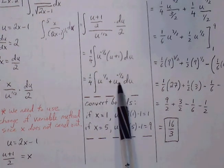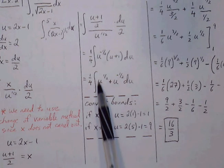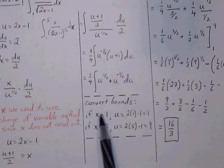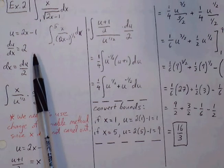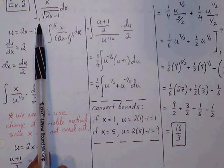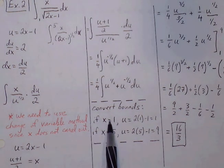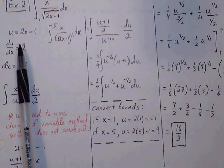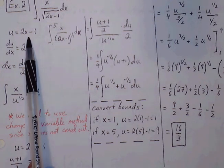So now we're ready to go through power rule, but we don't want to forget we have upper and lower bounds that we have to convert as well. So our initial lower bound is 1. So if x equals 1,